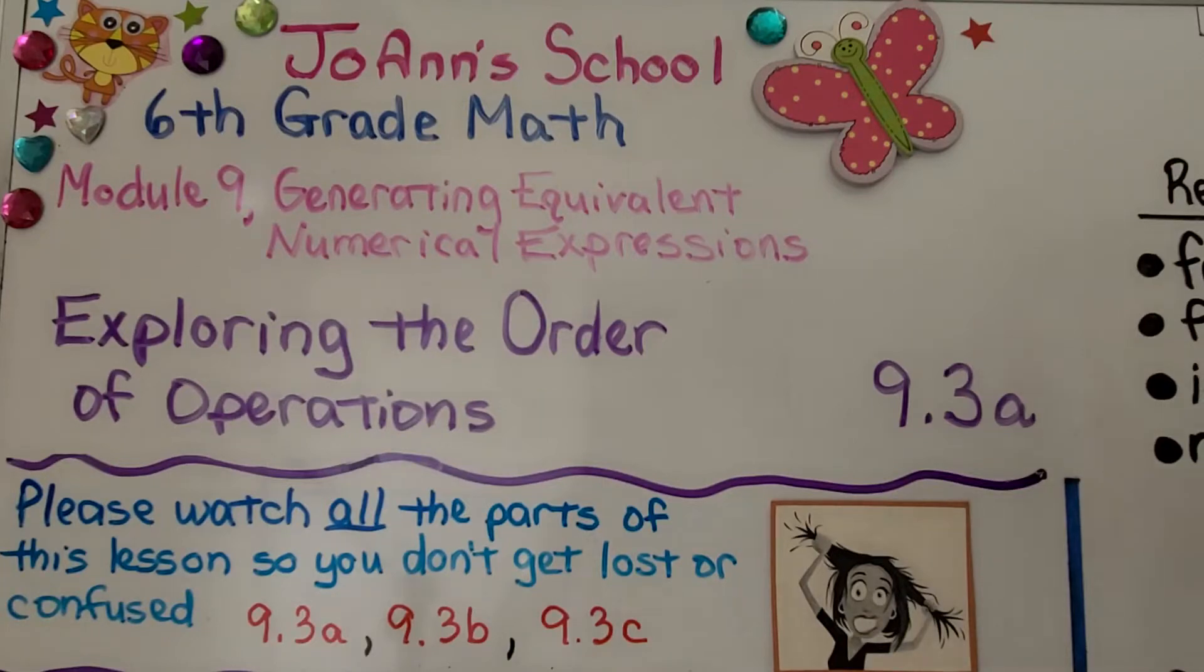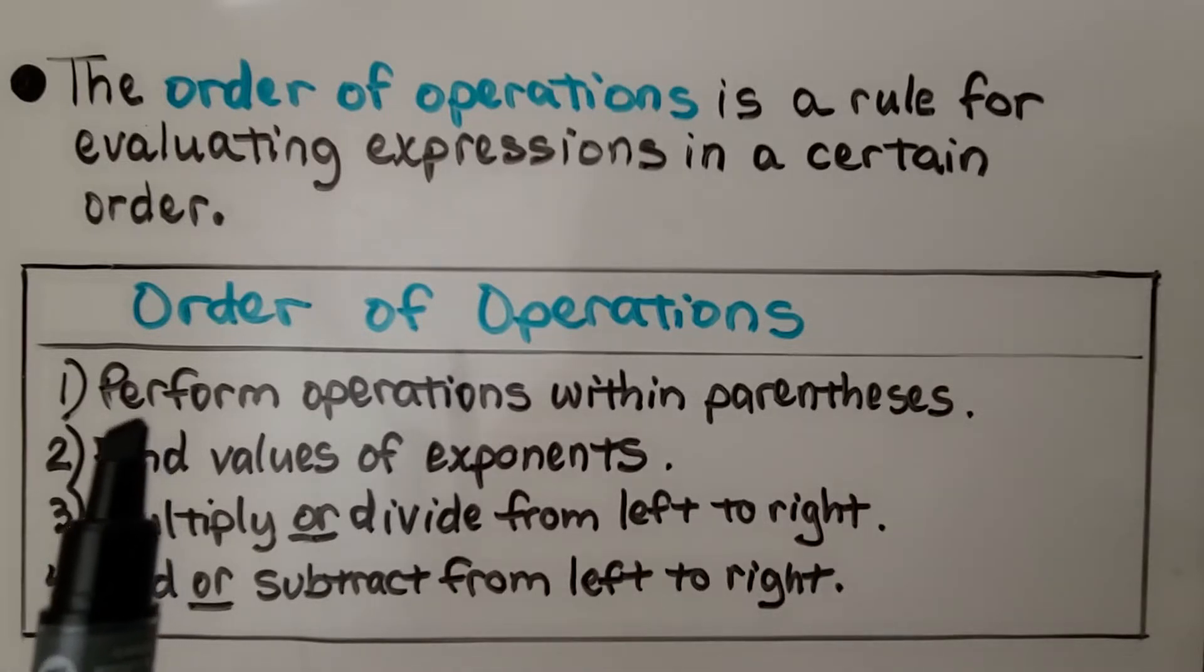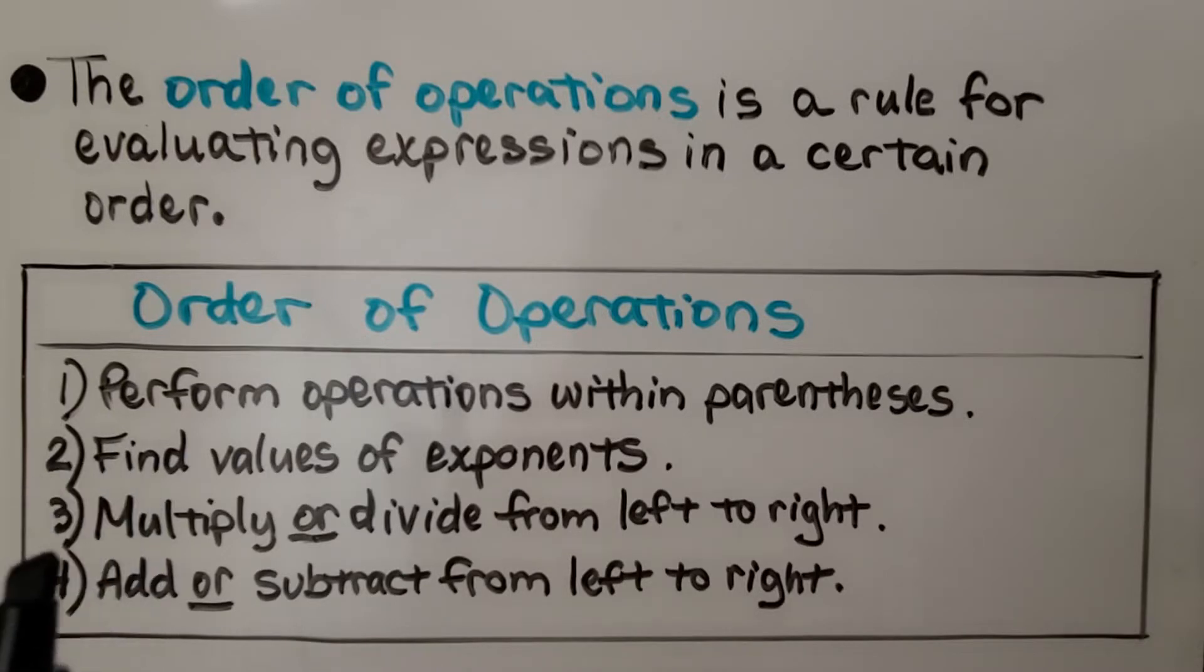Lesson 9.3a, Exploring the Order of Operations. The order of operations is a rule for evaluating expressions in a certain order. The first thing we do is perform operations within parentheses, then we find the values of exponents, then we multiply or divide from left to right, then we add or subtract from left to right.